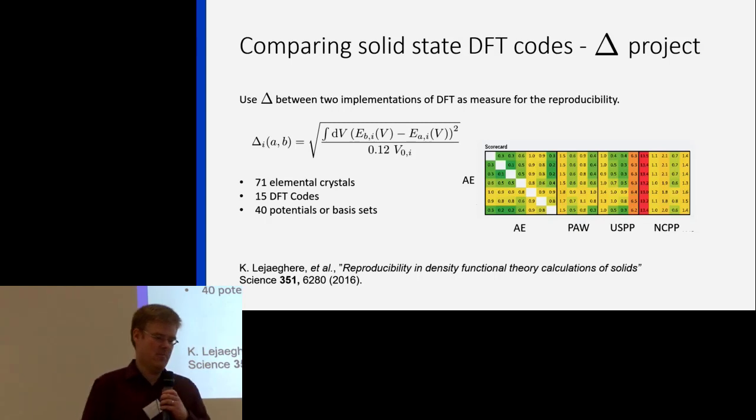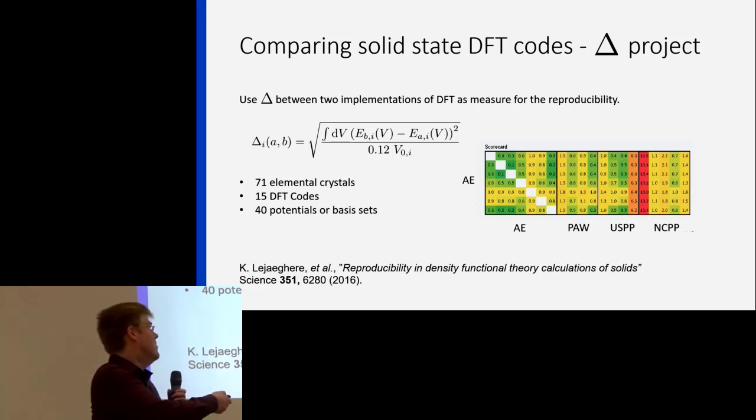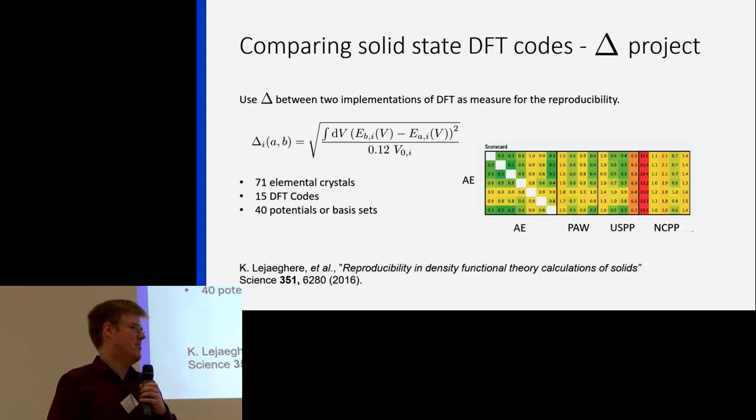As you have already heard from Stefan and Kurt in more detail there was this huge effort of our community to quantify precision in density functional theory by means of the delta project. And the message was that basically everything is fine except for the very old methods which you can see over there in red. One point to make here is that the values which you encounter for the very old ultrasoft pseudo potentials, for the very old non-conserving pseudo potentials, are about 14 milli electron volts which will be an order of magnitude which we meet again later.